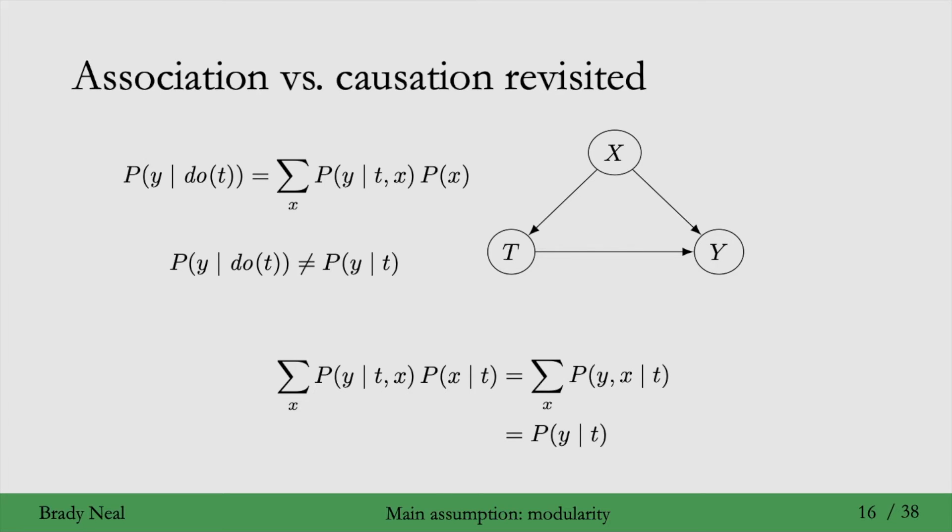So we have P(y | do(t)) and we have P(y | t). And one perspective on the difference between these two is just that the P(y | do(t)) has this P(x) here that we're multiplying by.